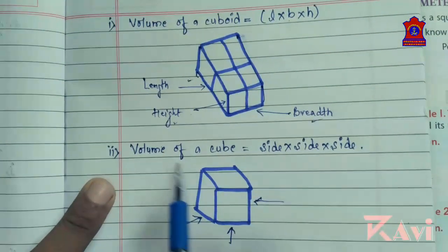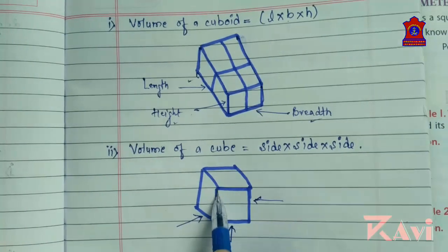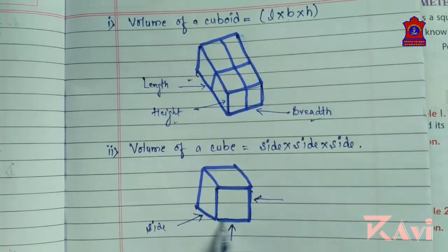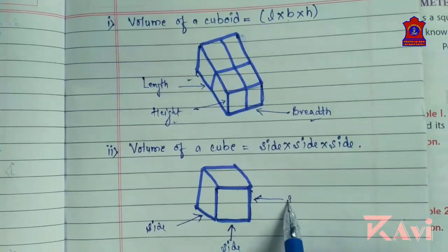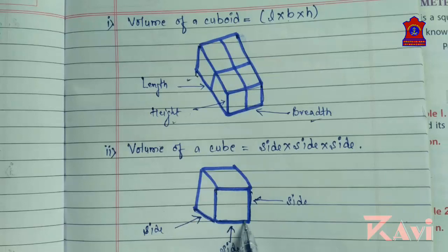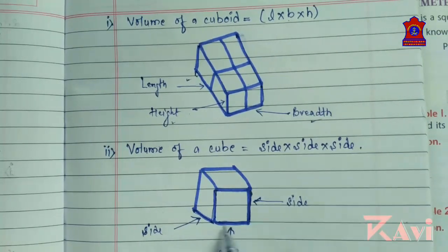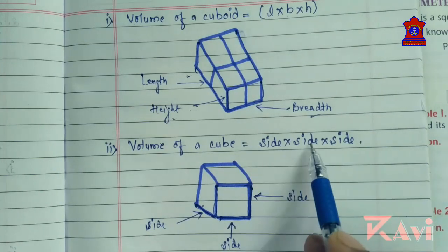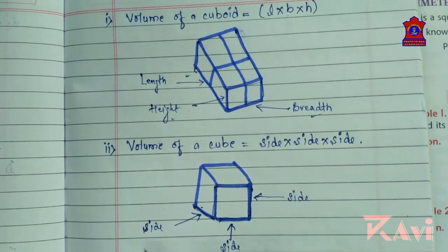Next is volume of a cube. Look at this figure. A cube is a three-dimensional object where all three sides are equal — height equals breadth and breadth equals length. So instead of length, breadth, and height, we say side into side into side. Volume of cube equals side into side into side. If one side is given, all sides are equal, so you multiply all three sides together.